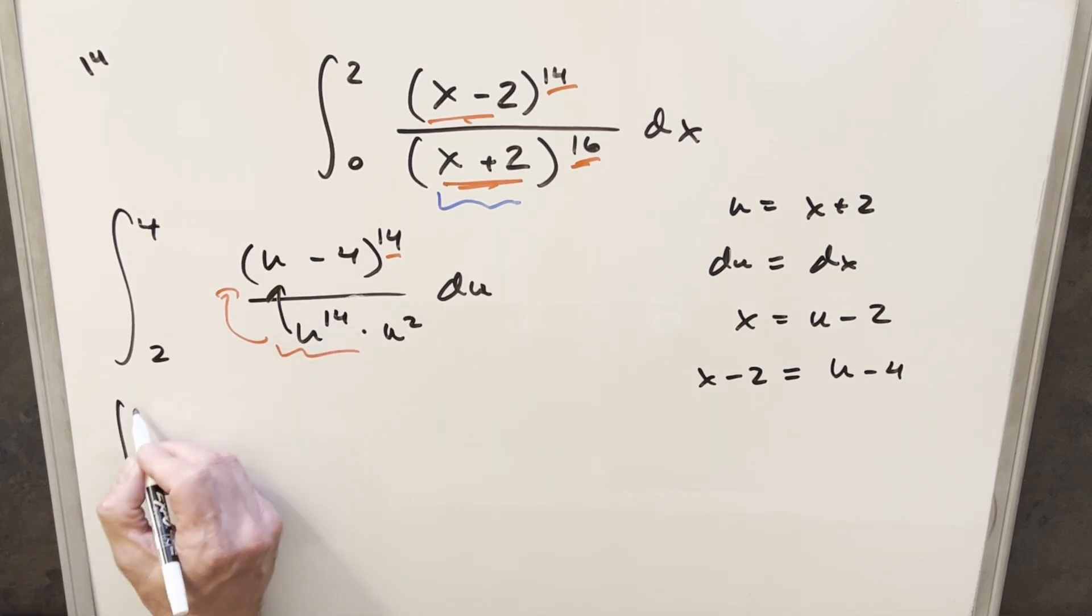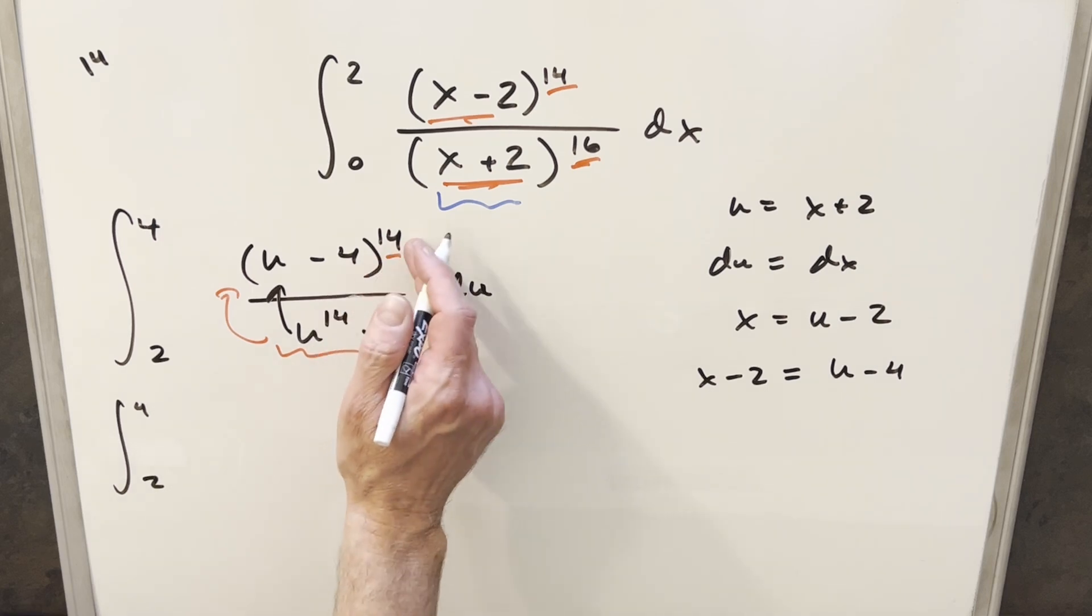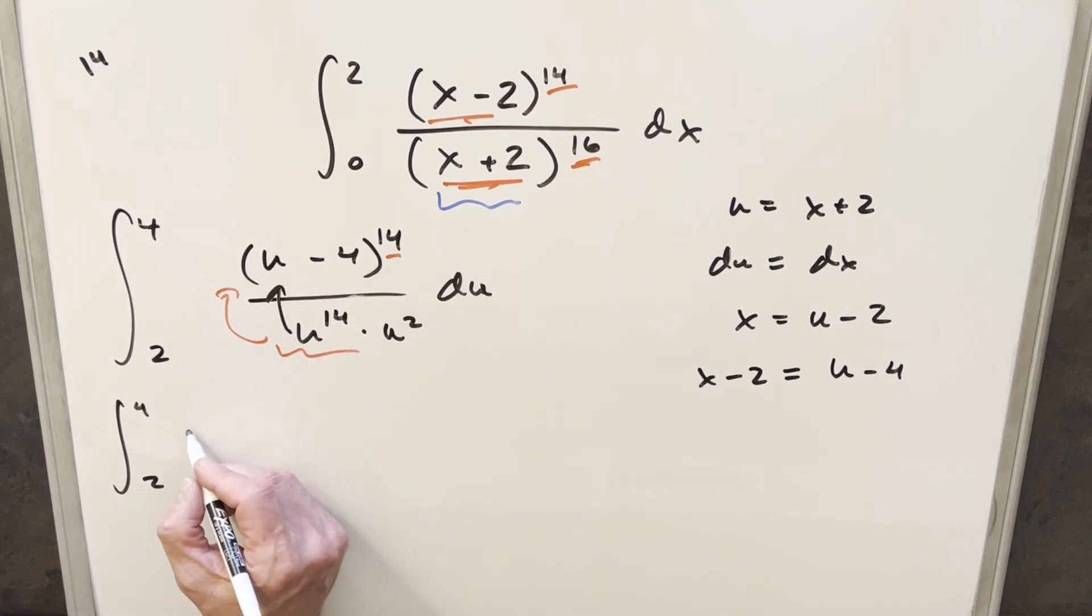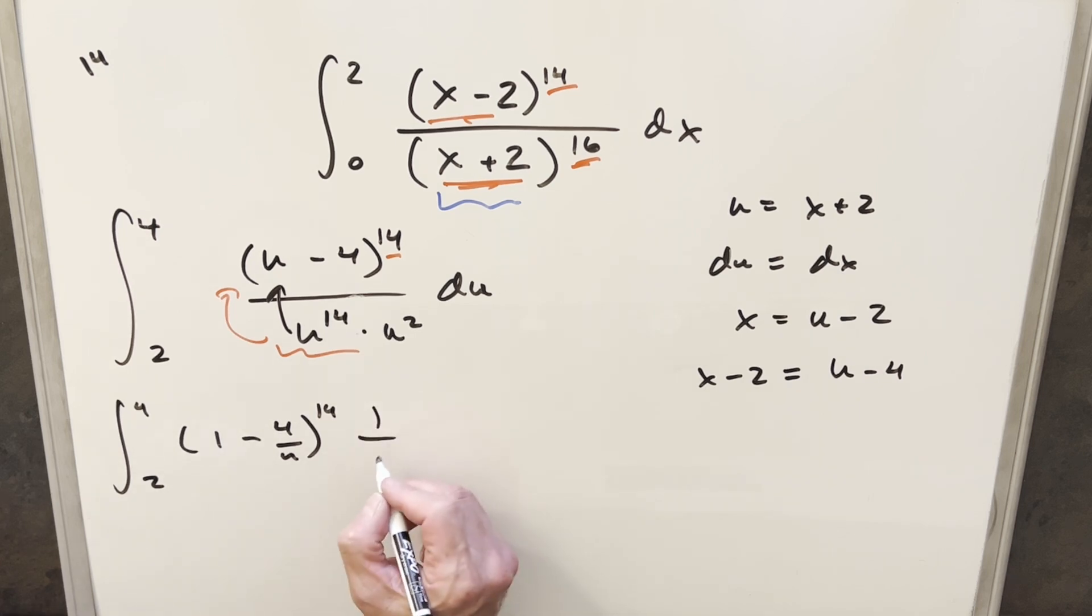So let's just rewrite this again. We've got our same bounds. When I divide this in, everything's now under the 14th power, so I can rewrite this. u divided into u is just 1 minus 4 over u, and all this is to the 14th power. And then we're still going to have this 1 over u squared du over here.